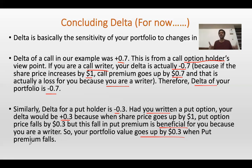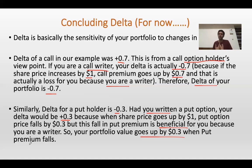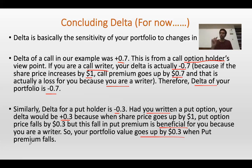Quick summary: Delta of a call for an option holder is positive. Delta of a call for an option writer is negative. Delta of a put for an option holder is negative. Delta of a put for an option writer is positive. In general, if there's a multiple-choice question asking what the delta of a call is, the answer is positive — because we speak from a holder's viewpoint. Delta of a put is always negative when asked in general terms, because when share price increases, put premium falls.